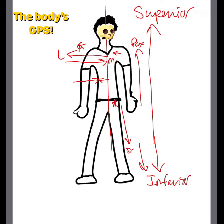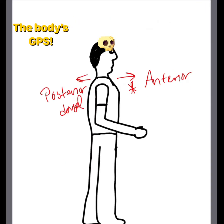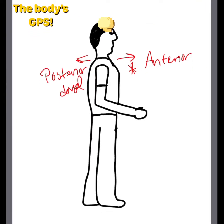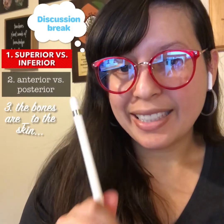Last but not least, we have superficial, also known as external, and deep, also known as internal. Superficial means towards the surface of the body — for example, the skin. Deep is the contrary: away from the body surface, or more internal.